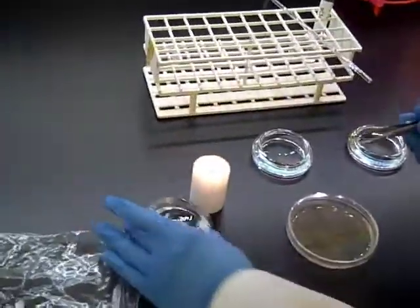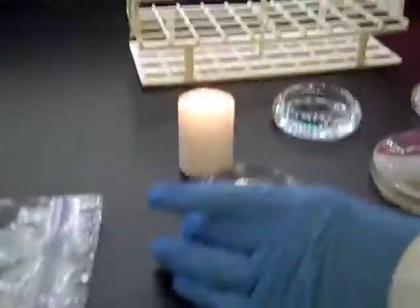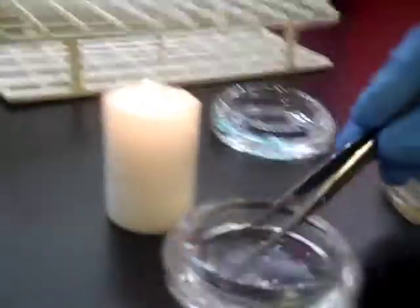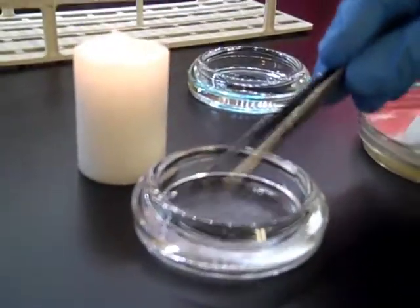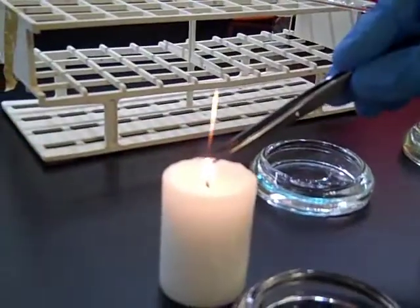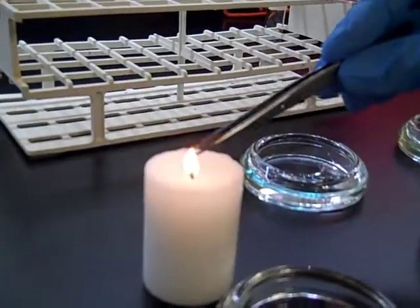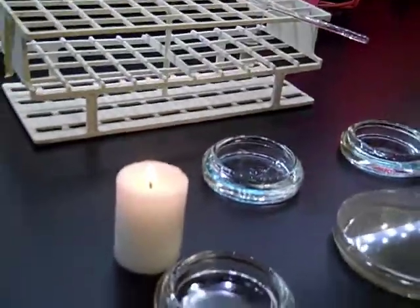First, you're going to flame sterilize your tweezers. You're going to need to use tweezers from home, just like when we sterilized the spreader in Lab 3. Take it, knock off any excess alcohol, and flame it. Let it cool for a few minutes.